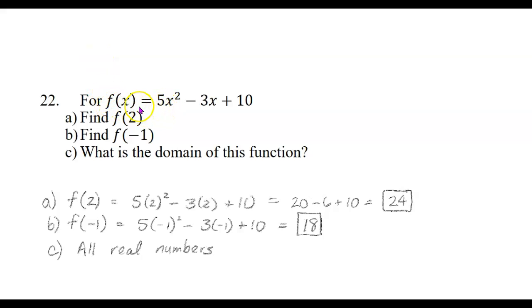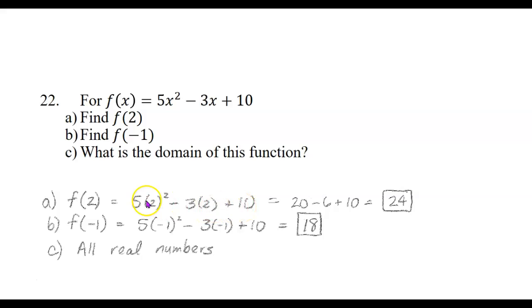Next we're dealing with functions and function notation. We're given the function f of x equals 5x squared minus 3x plus 10. First we're supposed to find f of 2 — evaluate this when we put 2 in place of x. So we're calculating 5 times 2 squared minus 3 times 2 plus 10. Remember, powers come before multiplication: 2 squared is 4, then 5 times 4 is 20, and 3 times 2 is 6. So 20 minus 6 is 14, plus 10 is 24.